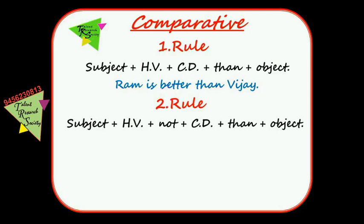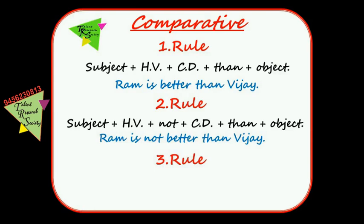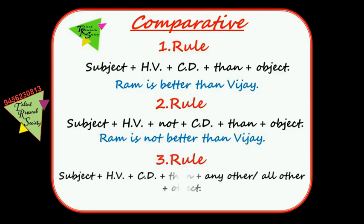Comparative Rule 2: Subject + helping word + not + comparative degree + than + object. For example, 'Ram is not better than Vijay.' Rule 3: Subject + helping word + comparative degree + than + any other / all other + object. For example, 'Ram is better than any other boys.'